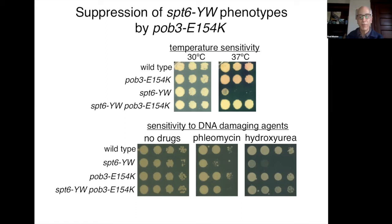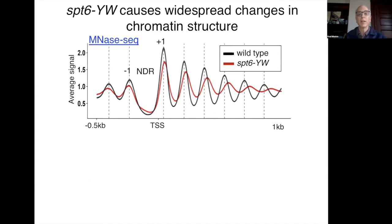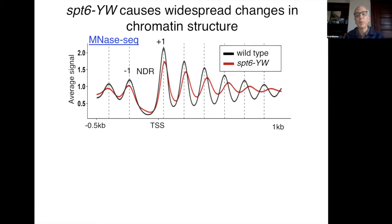We can also look at chromatin structure. From Olga's MNase-seq experiments, SPT6-YW causes a strong effect on nucleosome positioning — shown in this metagene analysis. In black is wild type, showing the expected nucleosome-depleted region and well-positioned +1, +2, +3 nucleosomes. In the SPT6-YW mutant, shown in red, the level and positioning of nucleosomes is reduced; the nucleosomes are fuzzier and the distance between peaks has increased.